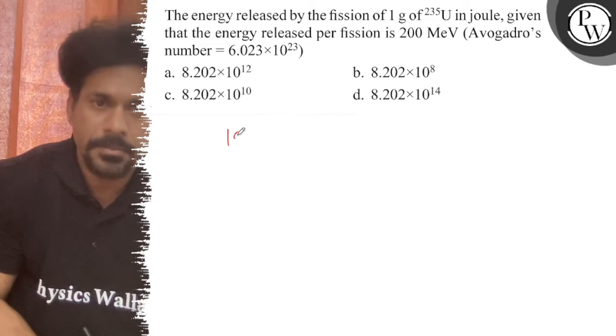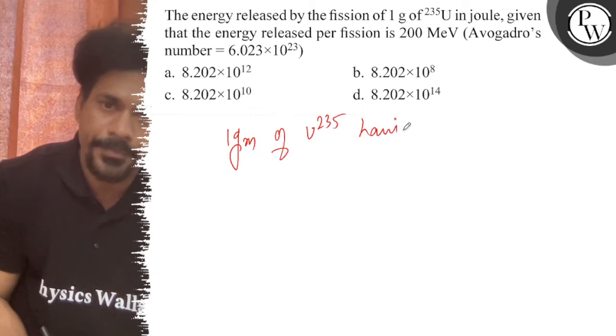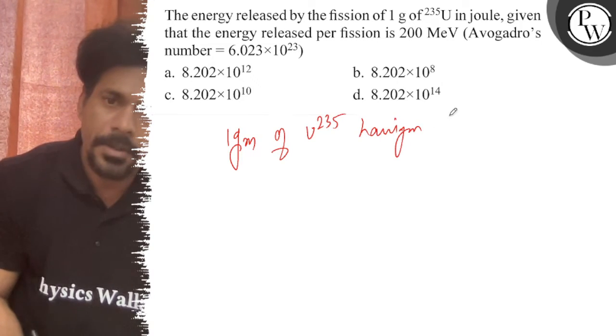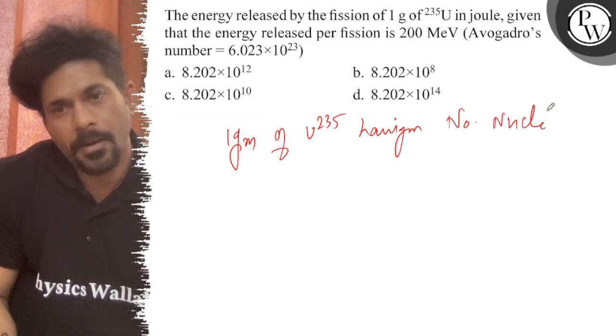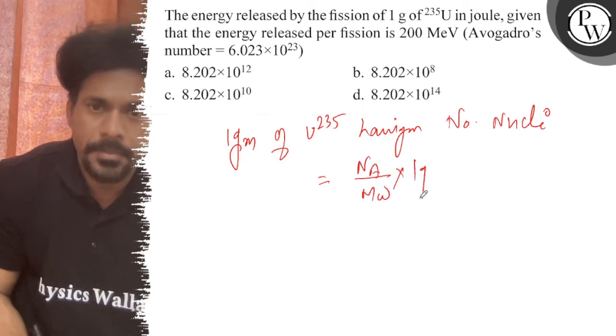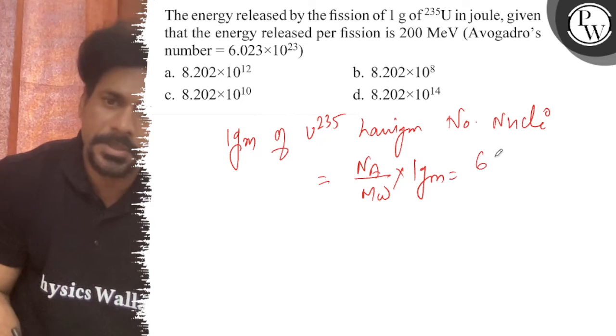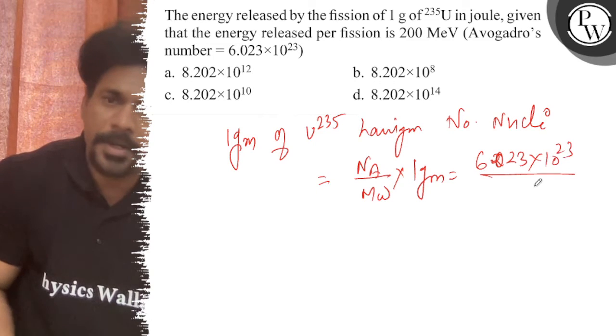So 1 gram of uranium-235 has a number of nuclei equal to Na over Mw times 1 gram. That is equal to 6.023 × 10^23 divided by Mw.